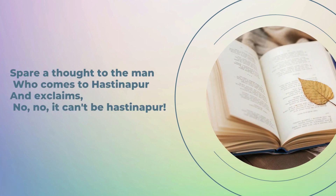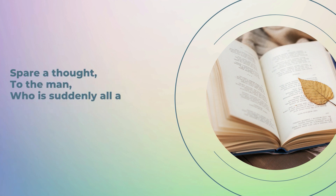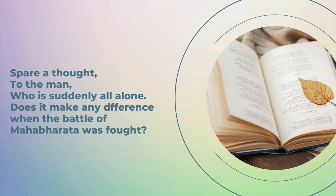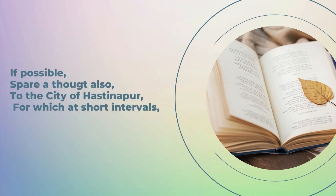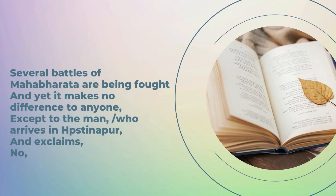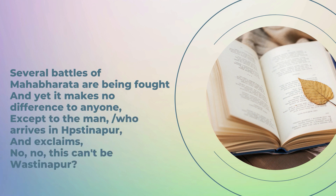I would like to share a poem by Shrikant Verma entitled 'Hastinapur.' Let me read out a few lines: 'Spare a thought to the man who comes to Hastinapur and exclaims — no, no, it can't be Hastinapur. Spare a thought to the man who is suddenly all alone. Does it make any difference when the battle of Mahabharata was fought? If possible, spare a thought also to the city of Hastinapur, for which at short intervals several battles of Mahabharata are being fought, and yet it makes no difference to anyone — except to the man who arrives in Hastinapur and exclaims: no, no, this can't be Hastinapur.'